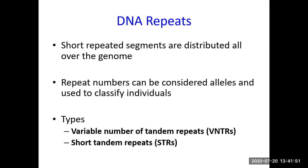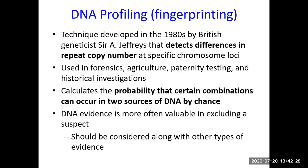DNA repeats — segments found near telomeres in heterochromatin regions — can have variable repeat copy numbers that act like alleles and are used to classify individuals. The two important types are VNTRs (variable number of tandem repeats) and STRs (short tandem repeats). These DNA repeat segments are used in forensics and clinical sciences in a technique called DNA profiling or fingerprinting.